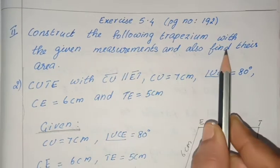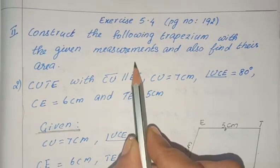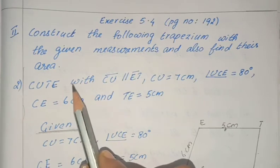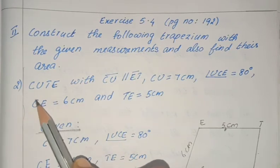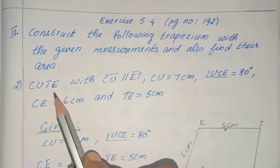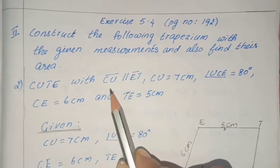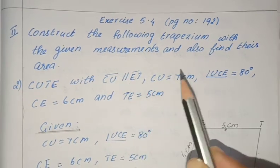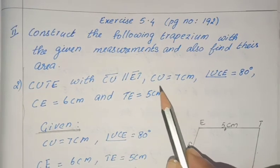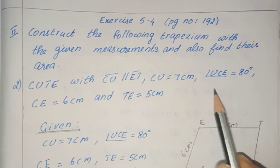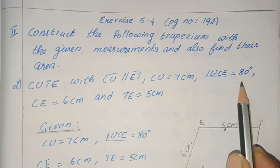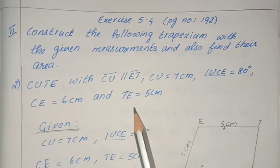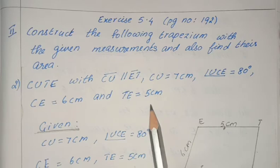Construct the following trapezium with the given measurements and also find the area. The name of the trapezium is CUTE, where CU is parallel to ET. The measurements are: CU is equal to 7 cm, angle UCE is equal to 80 degrees, CE is equal to 6 cm, and TE is equal to 5 cm.